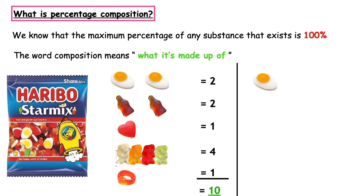If I wanted to work out the percentage of fried eggs, I would take the number of fried eggs that I have over the total number of sweets and multiply it by 100. So I would do 2 divided by 10 and multiply by 100. That would equal 20%. 20% of my Haribo star mix would have been made up from fried eggs.